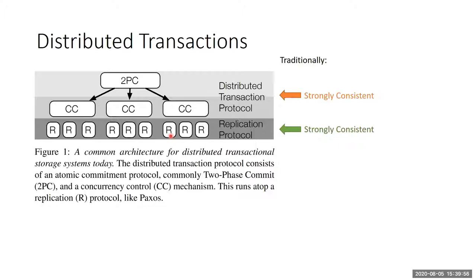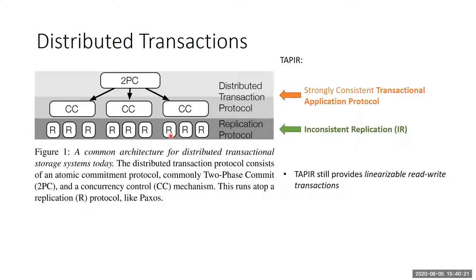But Tapir observes that with strongly consistent replication, we synchronize twice in the system. They ask whether we actually need to synchronize twice to run strongly consistent protocols. Instead, they suggest replacing the replication protocol with what they call inconsistent replication, and writing a new distributed transaction protocol that can work with this inconsistent replication. Because the replication is inconsistent, you cannot just take any off-the-shelf transaction protocol and run it on inconsistent replication. That's the motivation of the paper.